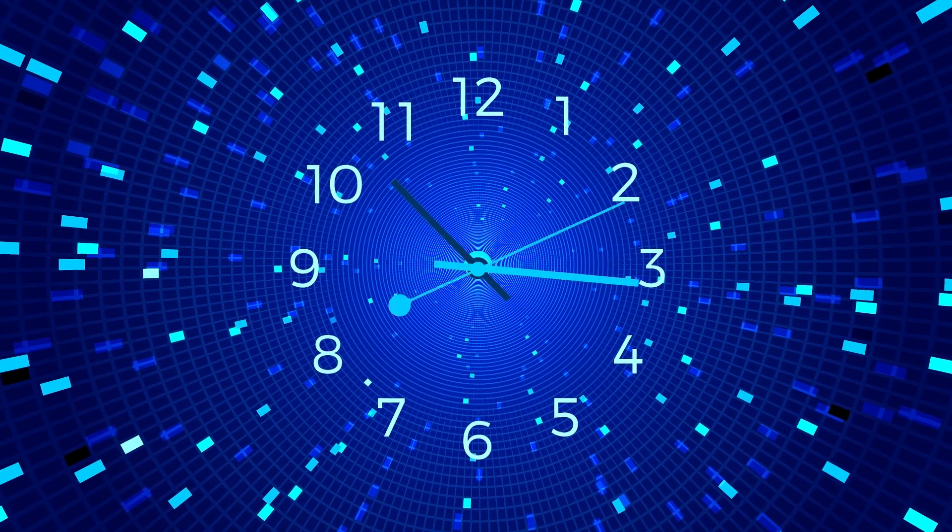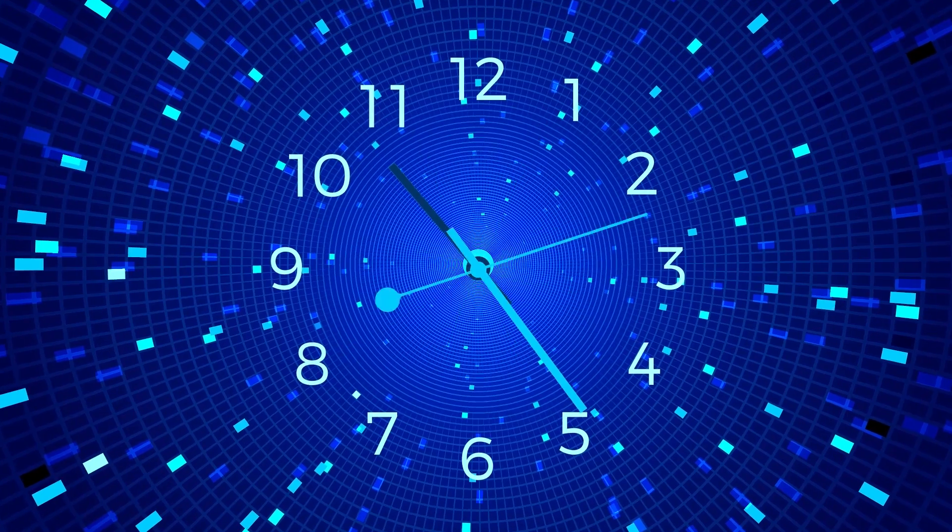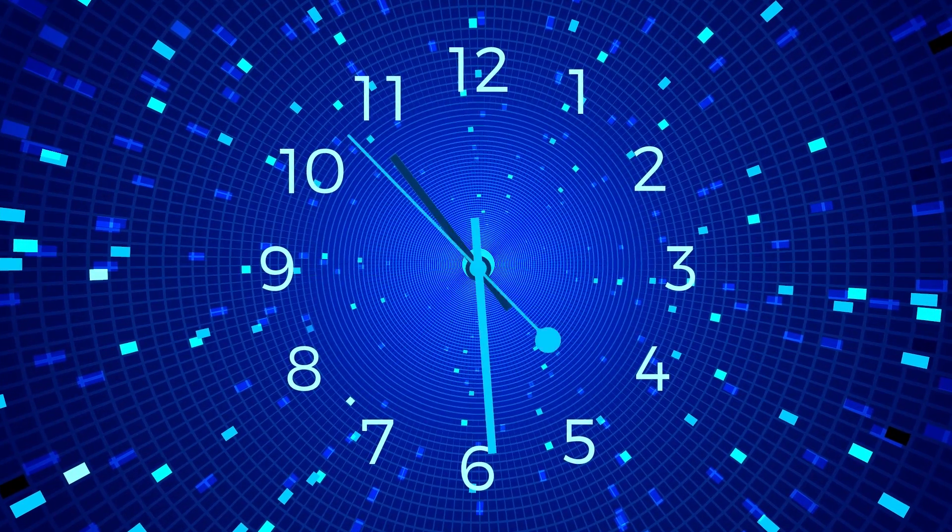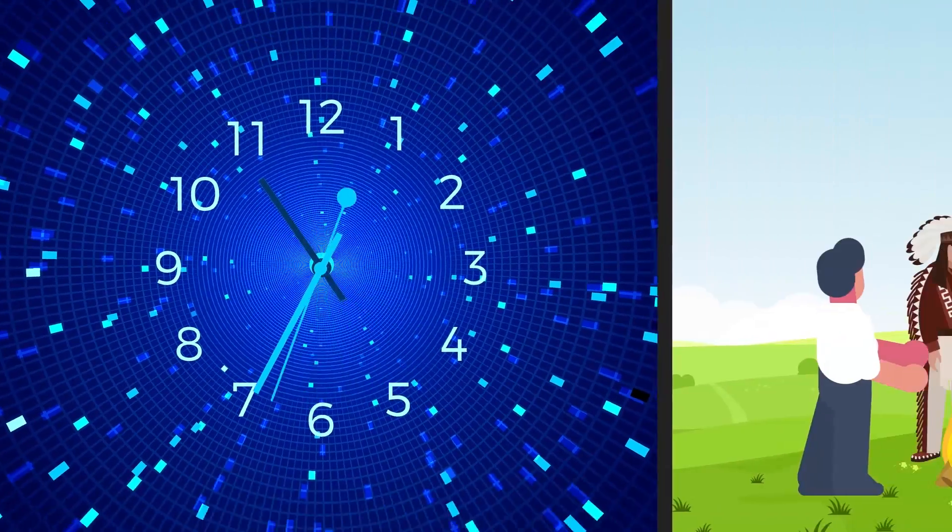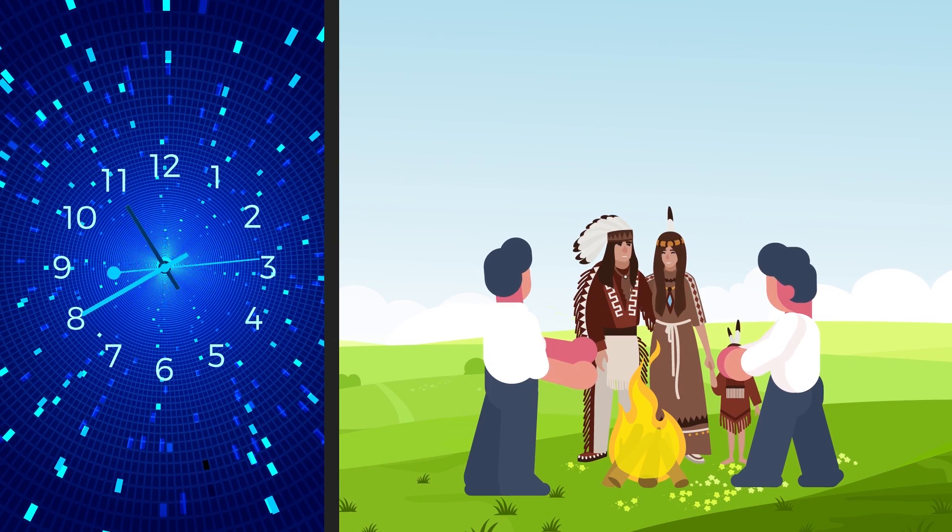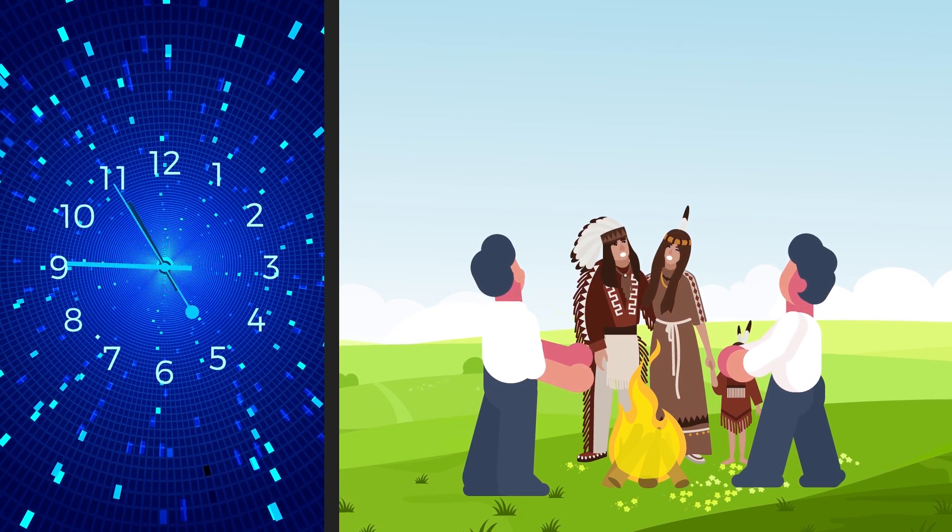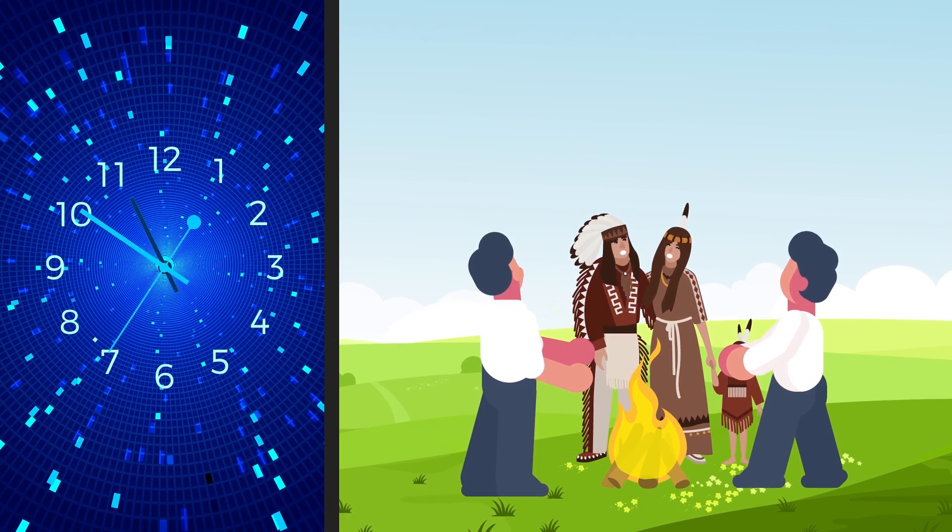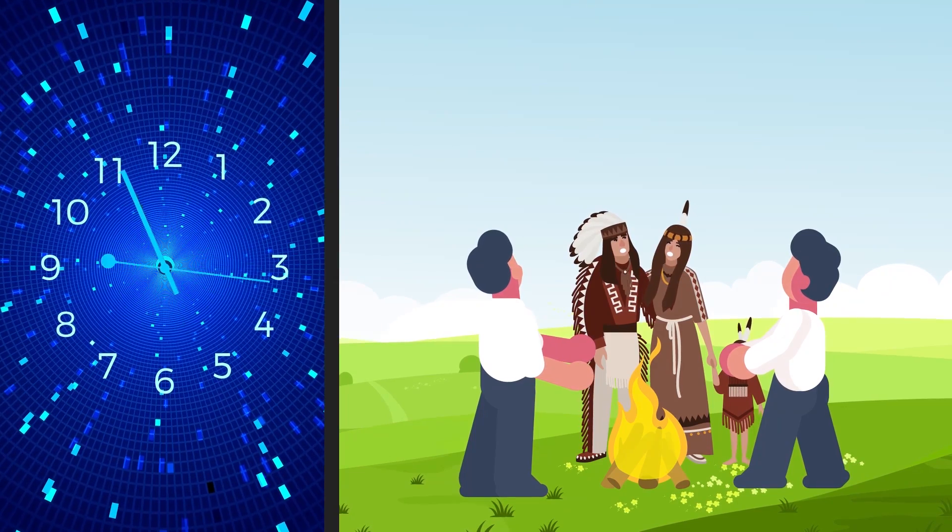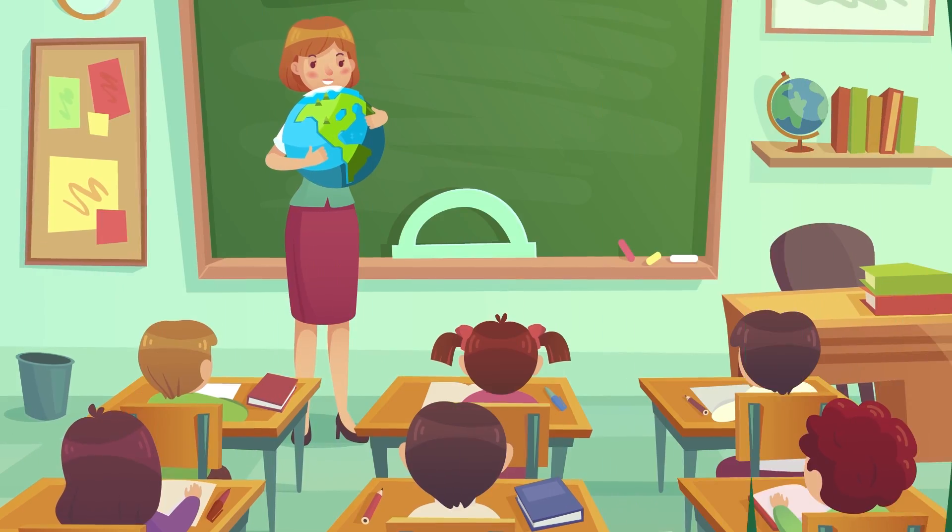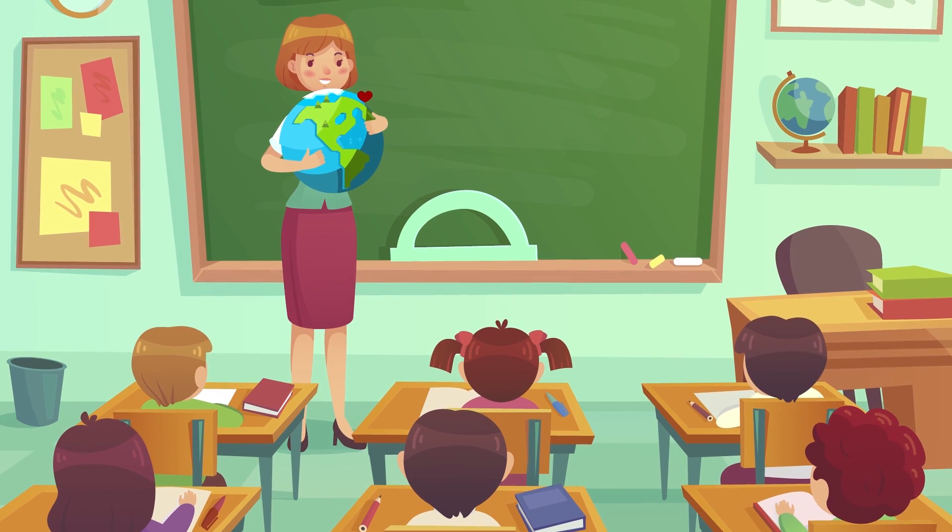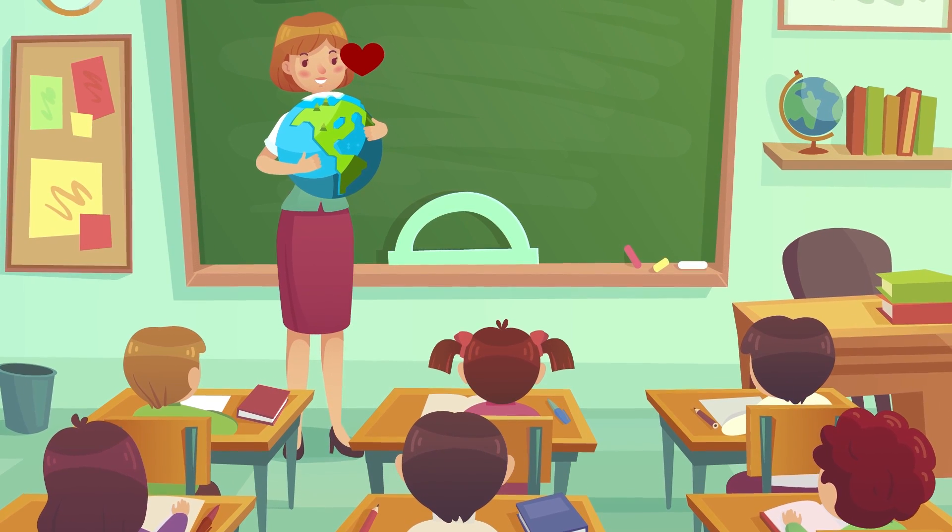Life is set to change in ways we could hardly imagine, and predicting life in 200 or even 500 years is almost impossible. Technology advances so rapidly that imagining future technologies is as impossible for us today as it would have been for the early European settlers to imagine the internet or space flight.